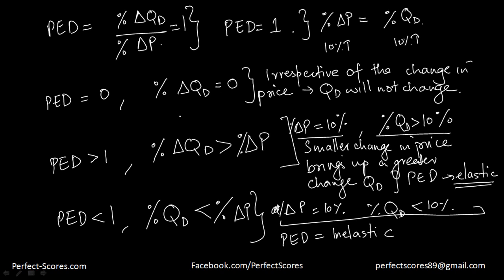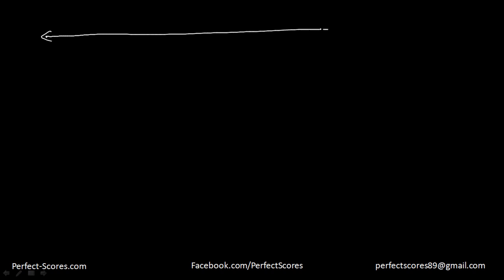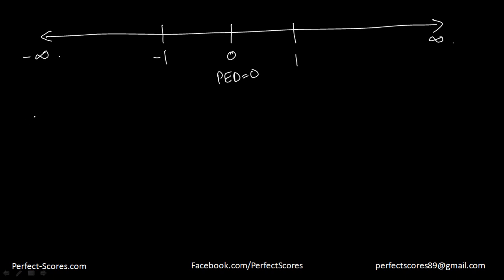So to summarize: when PED is 1, when it's 0, when it's greater than 1, and when it's less than 1. On the number line, price elasticity of demand can equal 0, 1, negative 1, going to positive infinity, or going to negative infinity. When PED equals 0, the percentage change in quantity demanded equals zero — there is no change.